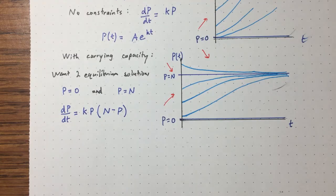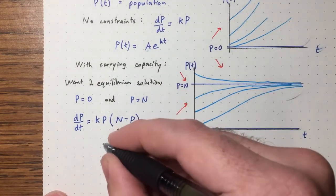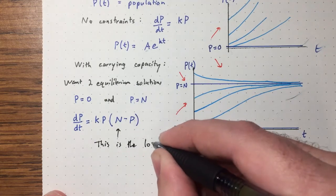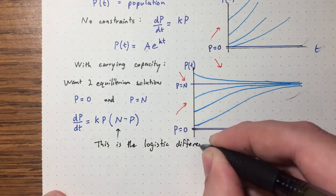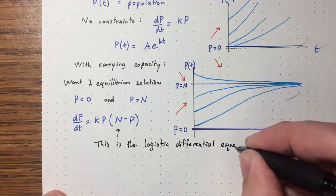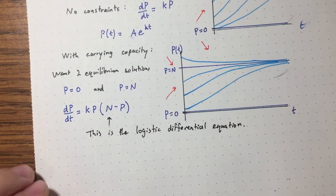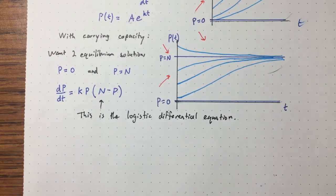So this is the differential equation I'll go with, and we've just discovered a really important differential equation. It has a name: it's called the logistic differential equation. The logistic differential equation has tons of applications, but one important one is population dynamics — it can model population growth with a carrying capacity.